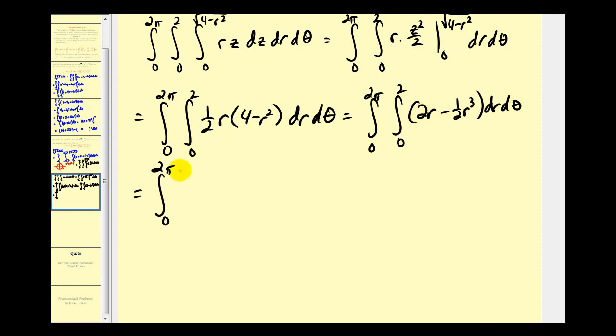We'll have two times R squared over two, that'll be R squared, minus one half times R to the fourth over four, so minus one eighth R to the fourth. Two for R will have four minus two to the fourth is sixteen divided by eight, that's two.